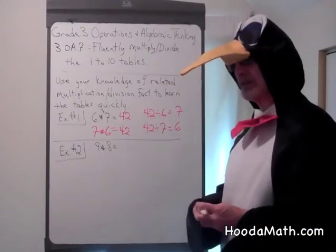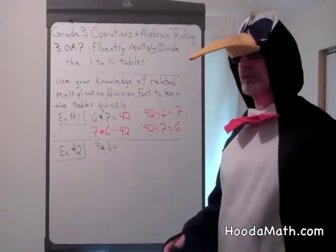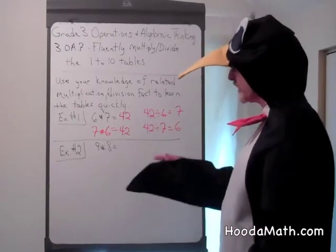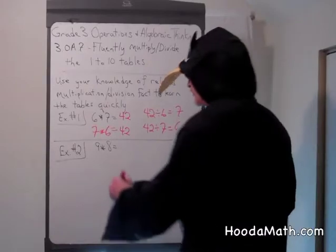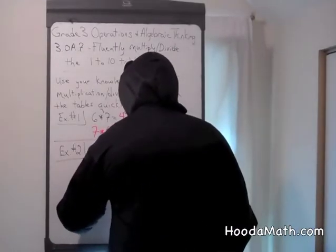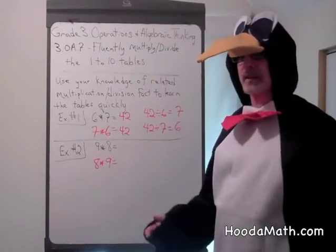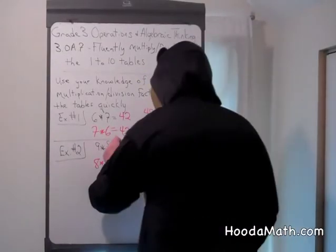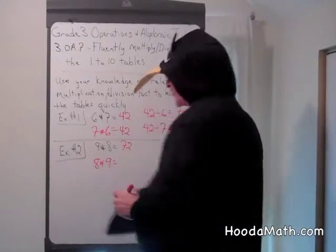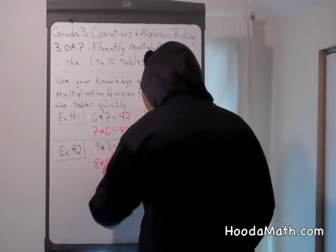Now, let's do the same thing with 9 times 8. Sometimes you have difficulty with 9 times 8. The related multiplication fact would be 8 times 9. Once you learn that 9 times 8 equals 72, then you also know that 8 times 9 is 72.